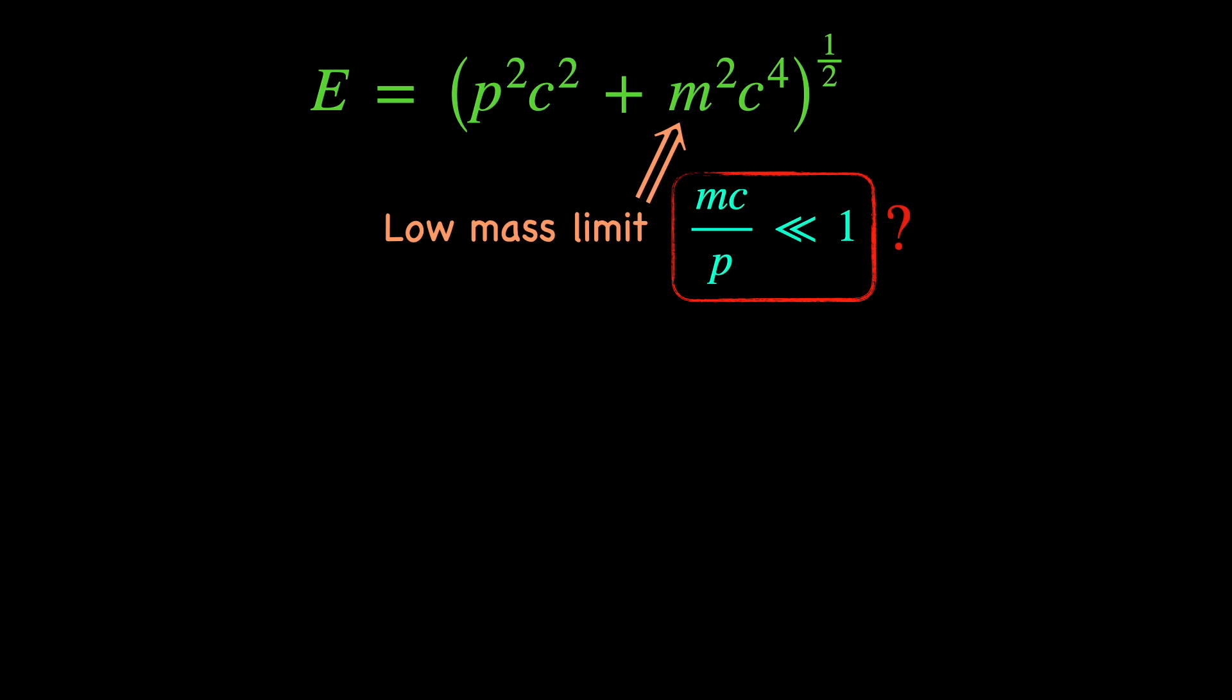We have discussed in the last video that smaller the momentum p compared to mc, more non-relativistic the particle is. This is the other extreme. Bigger the momentum compared to mc, the more relativistic is the particle.